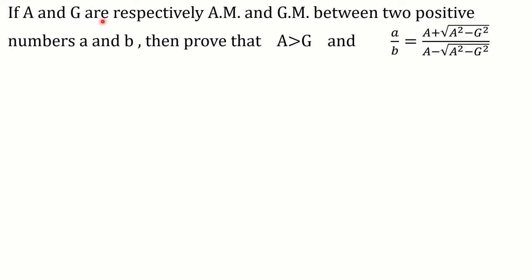If A and G are respectively the arithmetic mean and geometric mean between two positive numbers a and b, then prove that arithmetic mean is greater than geometric mean, and that a to b is equal to (A + √(A² - G²)) / (A - √(A² - G²)).